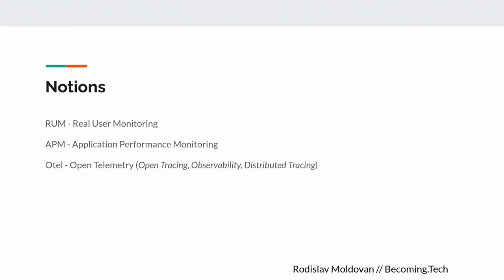80% of problems are solvable today in 15 minutes. The remaining 20% — if not solved in the first 15 minutes — can take up to one hour, but no longer. Today I'll use notions like RUM (Real User Monitoring), APM (Application Performance Monitoring), and OTEL — OpenTelemetry — which is the most trendy word right now.